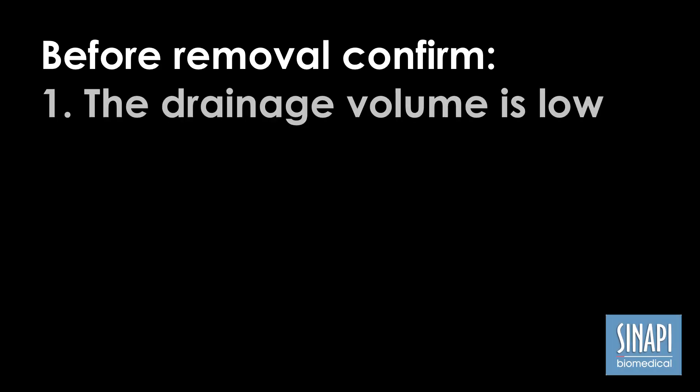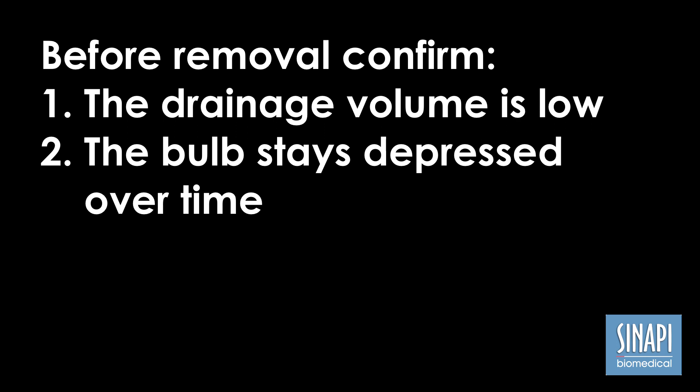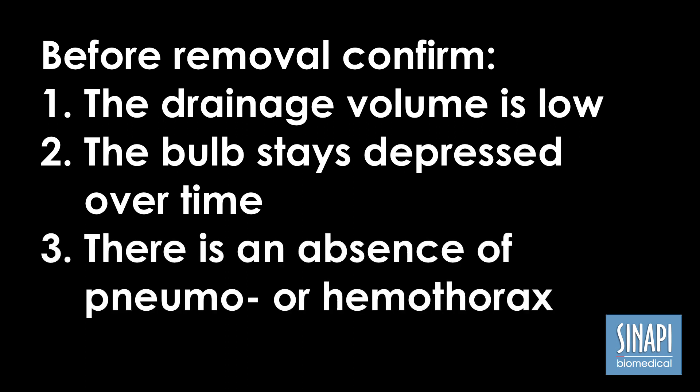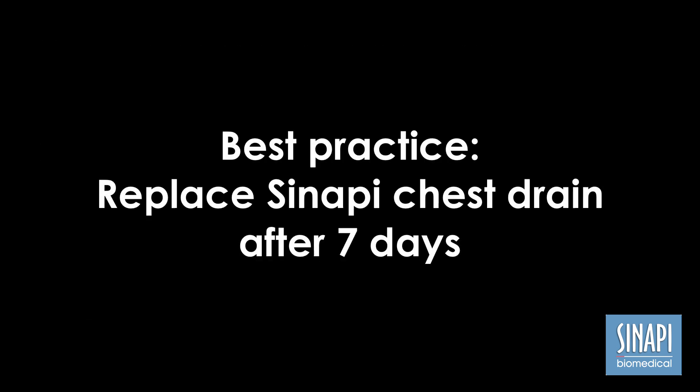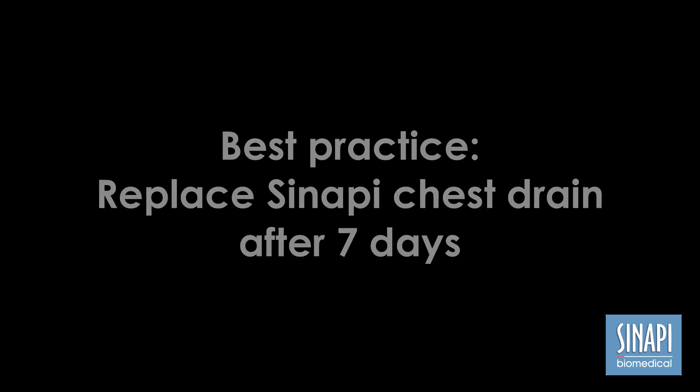Before removing the chest catheter, confirm that the drainage volume is low, the bulb stays depressed over time, and there is an absence of pneumo- or haemothorax with clinical examination or chest x-ray. Best practice involves replacing the Synapi chest drain after 7 days.